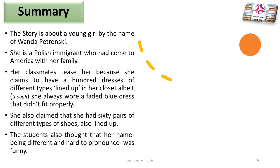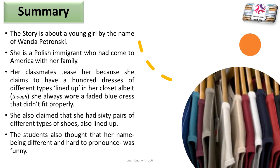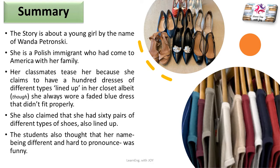The story is about a young girl by the name of Wanda Petronsky. She is a Polish immigrant who had come to America with her family. Her classmates tease her because she claims to have a hundred dresses of different types lined up in her closet, although she always wore a faded blue dress that didn't fit properly. She also claimed to have sixty pairs of different types of shoes lined up. The students also thought her name was different and hard to pronounce, which they found funny.